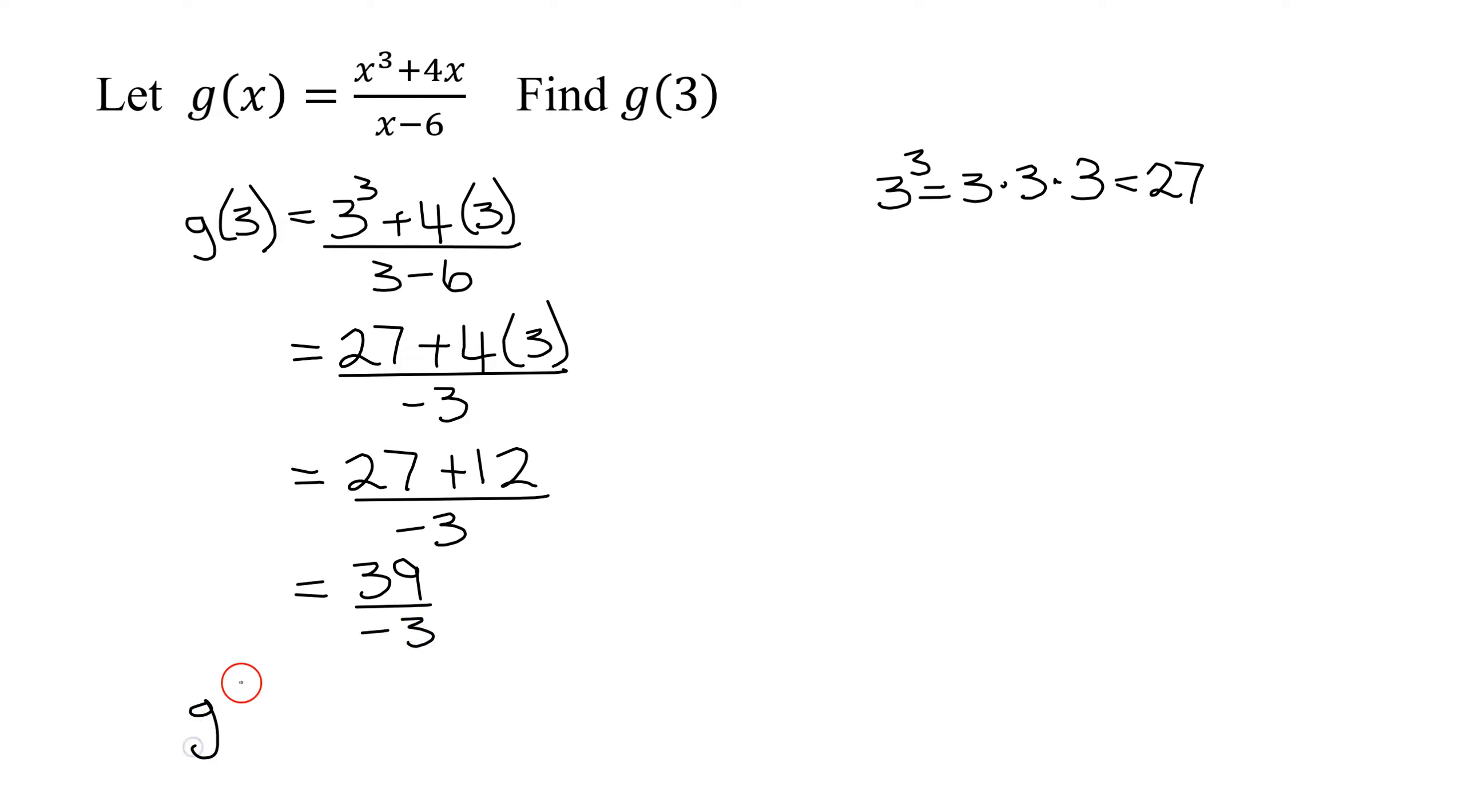So what is the value of the function g when x equals 3? That's g of 3. 39 divided by negative 3 is negative 13. That's g of 3.